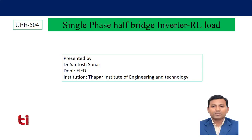Today I'm going to discuss about single phase half bridge inverter with RL load. In the last class I discussed a single phase half bridge inverter with resistive load. There we have seen that even harmonics are not present in our system, but all odd harmonics are there. We analyzed the output voltage waveform and found out the fundamental component. Today we will see some more features of this half bridge inverter and connect it across the RL load, observing the behavior of the switches when the load is inductive.